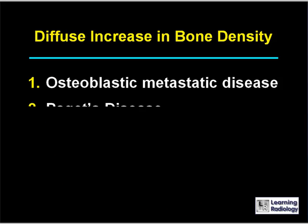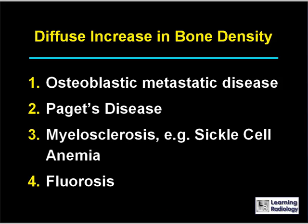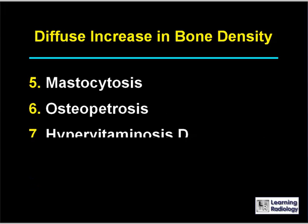The causes for diffuse increase in bone density include osteoblastic metastatic disease, Paget's disease, myelosclerosis such as seen in sickle cell anemia, fluorosis, mastocytosis, osteopetrosis, and hypervitaminosis D.